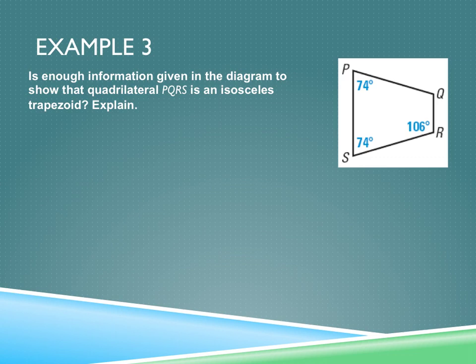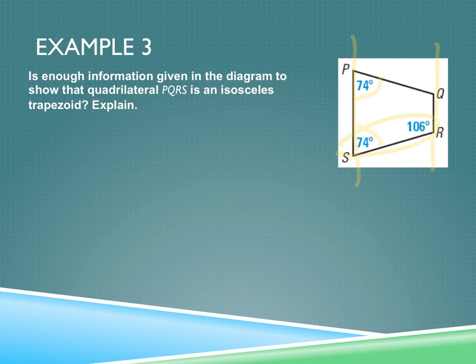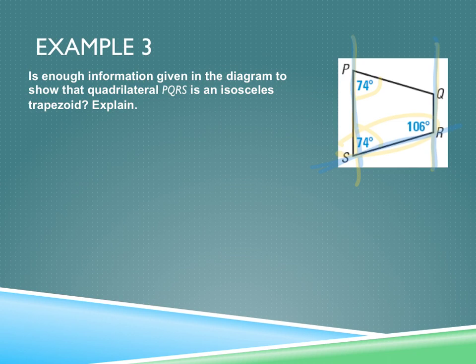Is enough information given in the diagram to show that this quadrilateral is an isosceles trapezoid? Yes. We can show these are parallel lines and check that the co-interior angles are supplementary. We can also show that the base angles are congruent, and by the converse, the legs would be congruent. PS and QR are parallel with a transversal, and because angle S and angle R are supplementary, lines PS and QR are parallel. So yes, there is enough information.